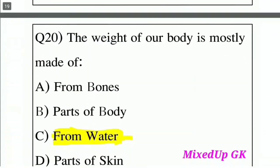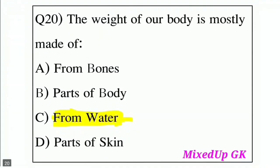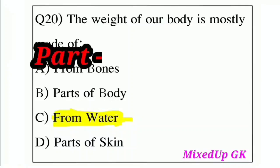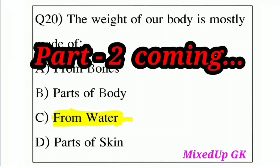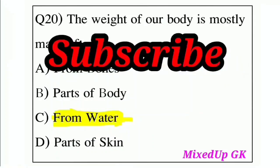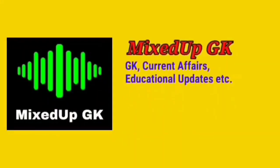Question 20: The weight of our body is mostly made of — Option A: Bones, Option B: Body parts, Option C: Water, Option D: Skin. The correct answer is Option C: Water. That's all for today's video. In the next video I will discuss more questions. Thank you and see you in the next video.